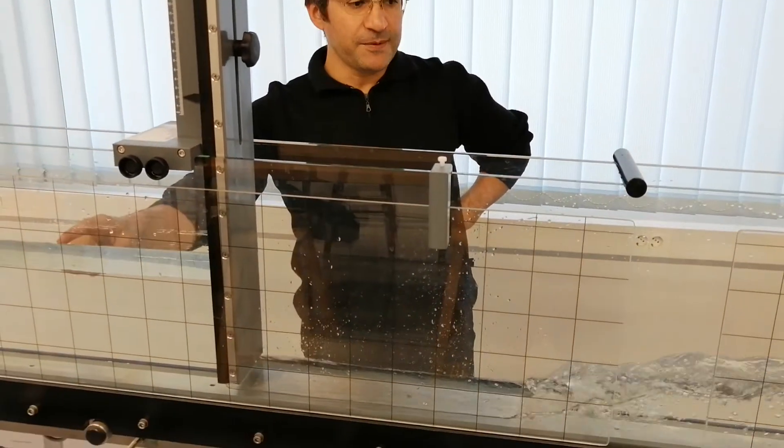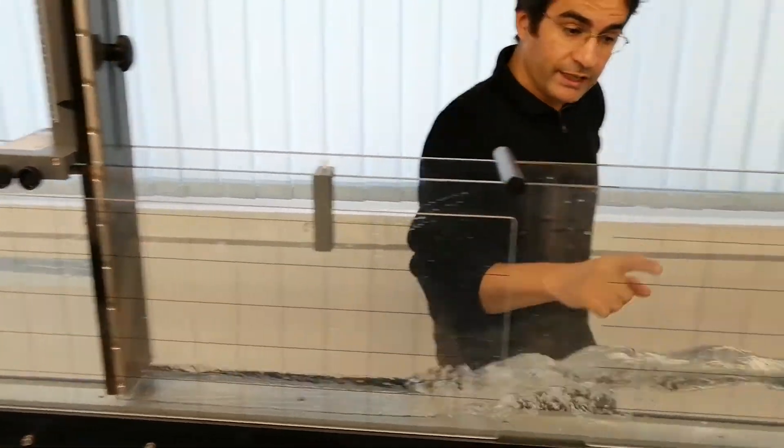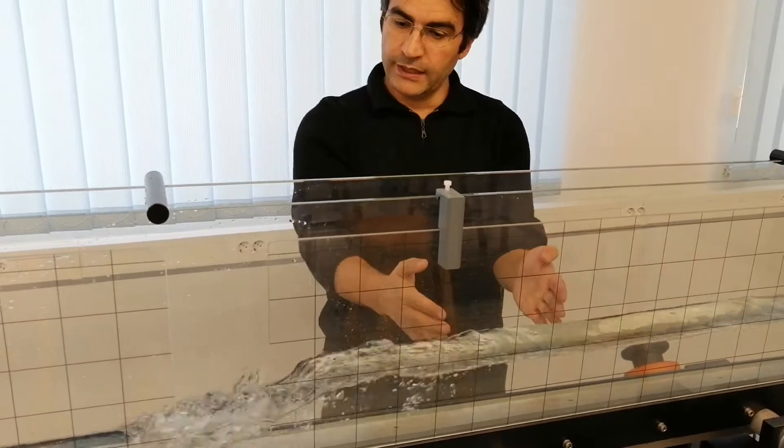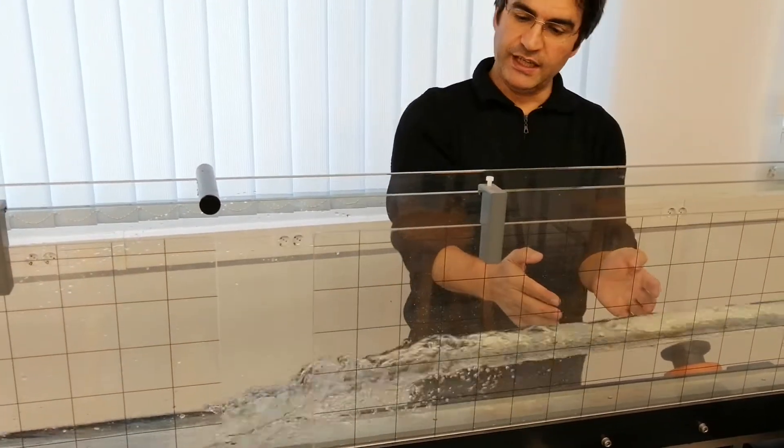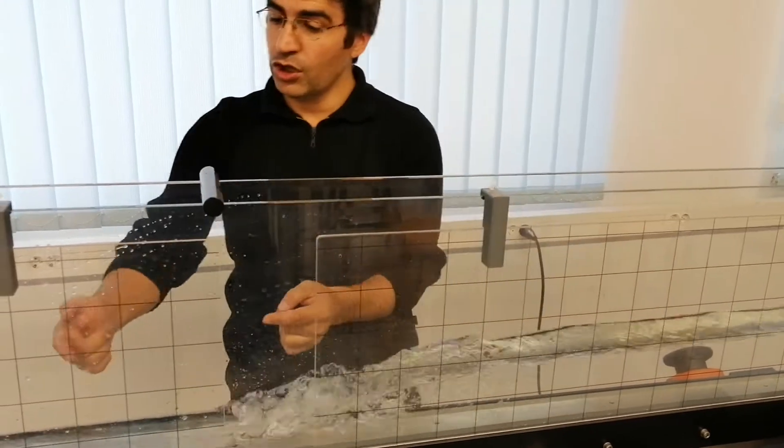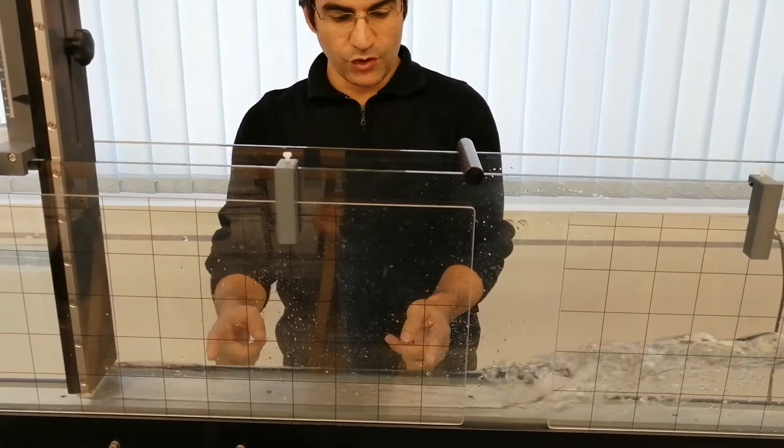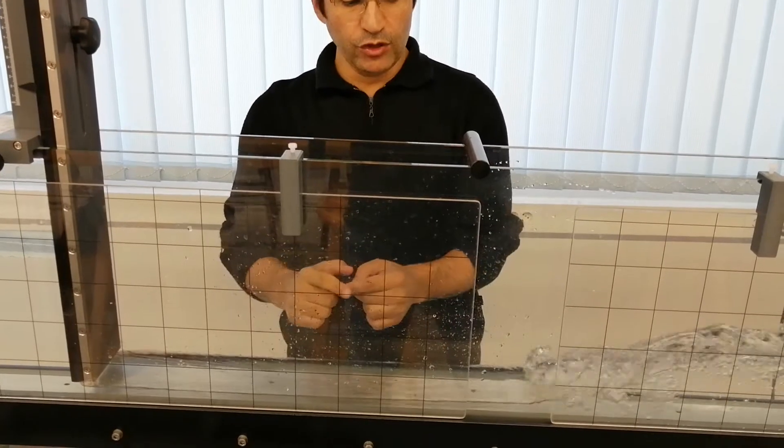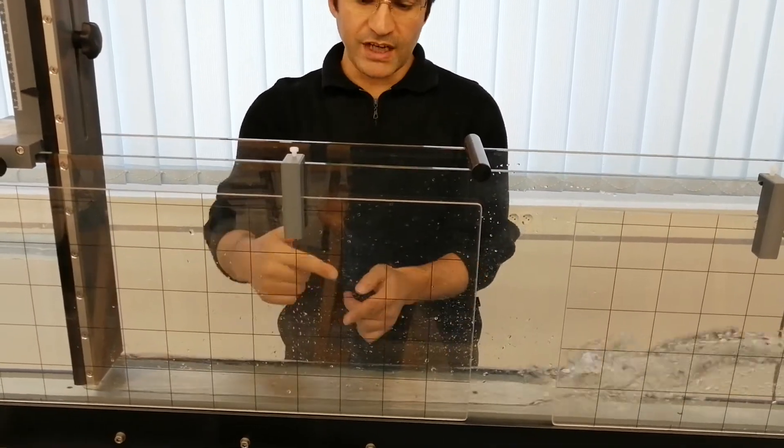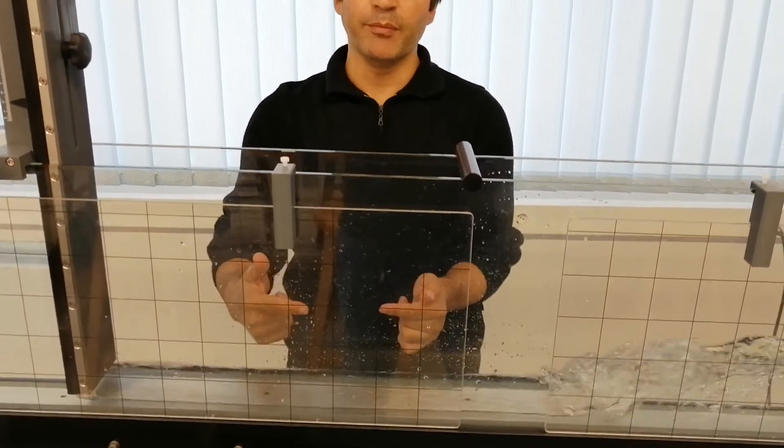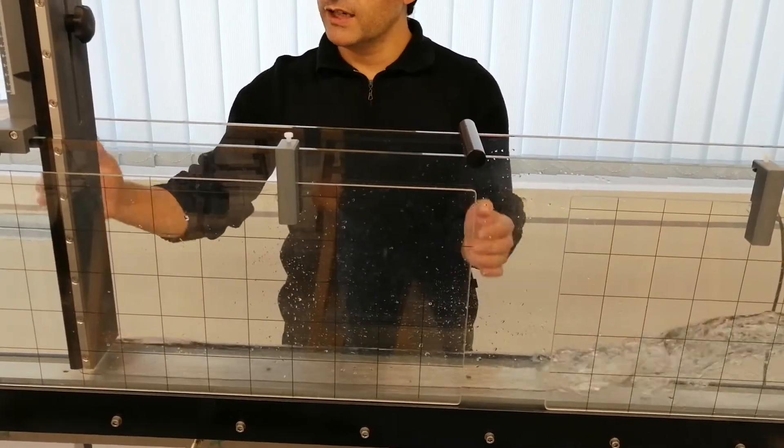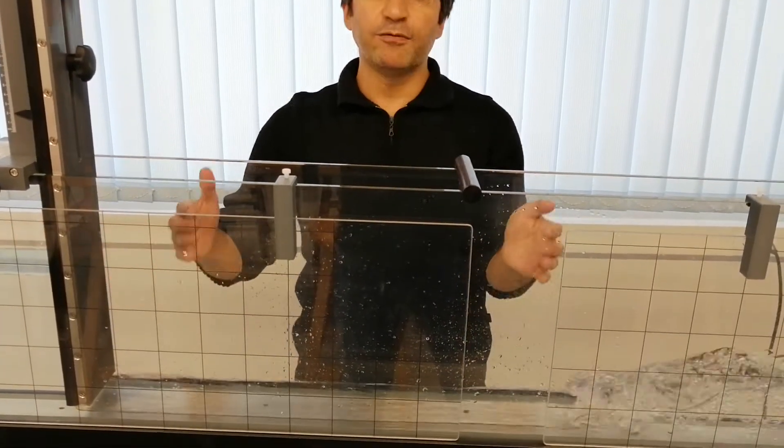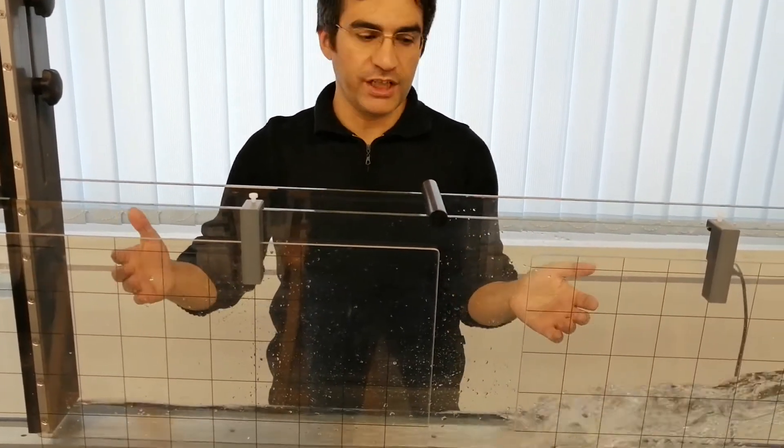As you can see, the water level and the head upstream, and also water level downstream after the hydro structure, have increased. Also, the velocity of this part will increase because the section area is the same. If the discharge increases, this means that flow velocity will increase.